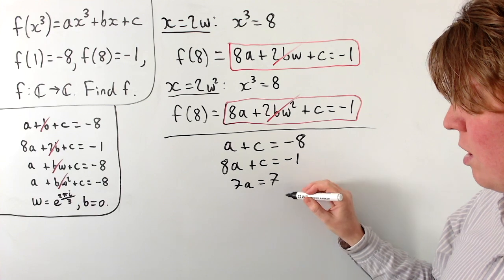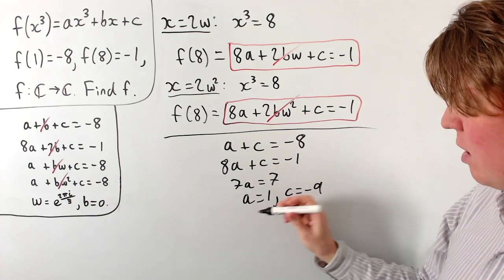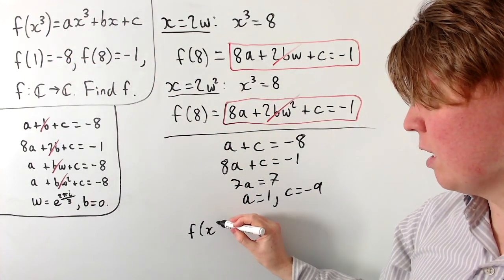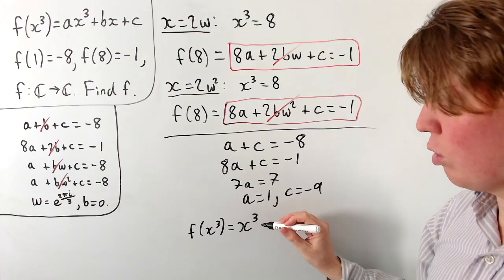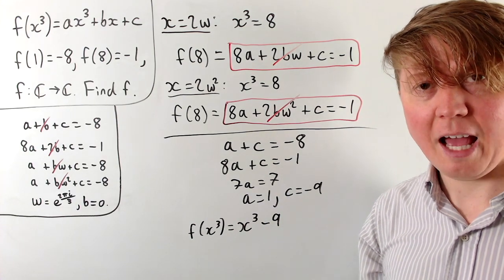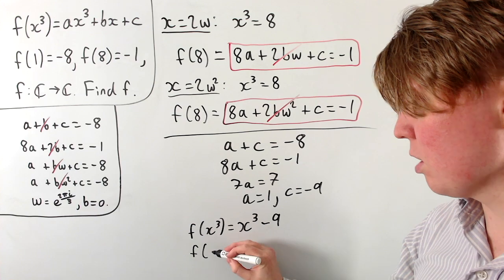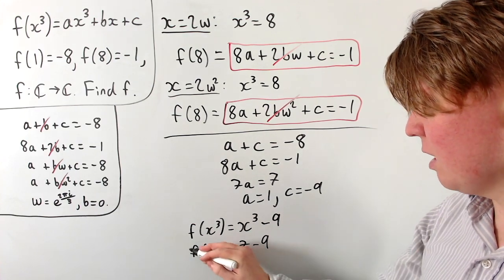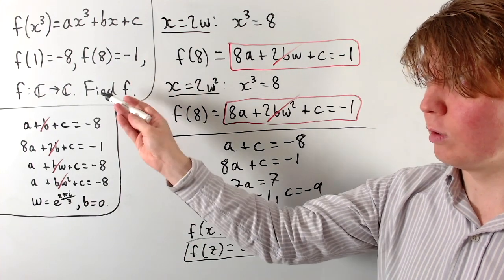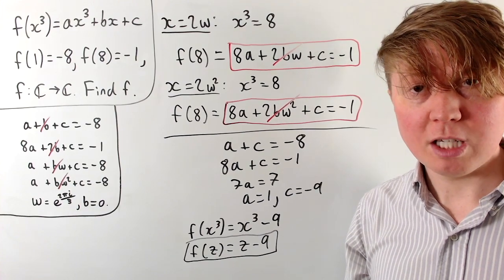Subtracting the first equation from the second: 7a = 7, so a = 1. Substituting back gives c = -9. So our constants are a = 1, b = 0, c = -9, meaning f(x³) = x³ − 9. Replacing x³ with a general variable z, we get f(z) = z − 9. This works for all complex values of z, and we've verified there are no contradictions across all six equations.